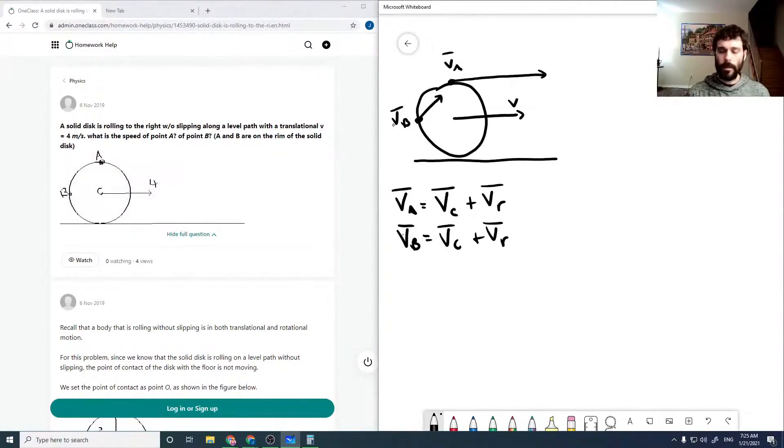Now, if we break these down, our rotational velocity is omega R.